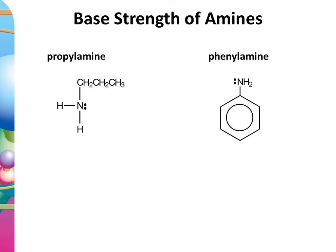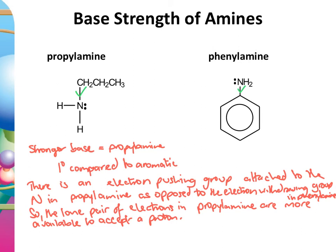Comparing propylamine and phenylamine: propylamine is the stronger base. Propylamine is a primary amine with an electron-pushing alkyl group attached to the nitrogen, whereas phenylamine is an aromatic amine with an electron-withdrawing benzene group directly attached to the nitrogen. This means the lone pair of electrons on the nitrogen in propylamine is more available to accept a proton, making it the stronger base. Then comparing phenylmethylamine and ammonia: phenylmethylamine is stronger — here the benzene ring is not directly on the nitrogen; there's a CH2 in between, so it acts as an electron-pushing alkyl group, increasing electron density on the nitrogen.